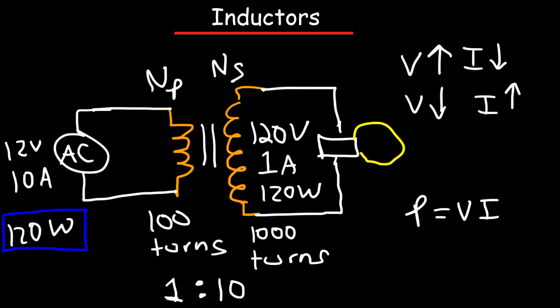And so this makes sense. According to the law of conservation of energy, energy cannot be created or destroyed. So the energy that we put into one circuit must equal the energy that comes out of the second circuit, ideally speaking. Of course, you're going to lose some small amounts of energy to friction and heat and such things, but in a perfect ideal situation,